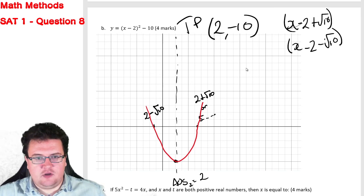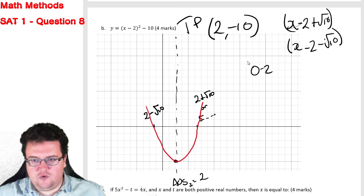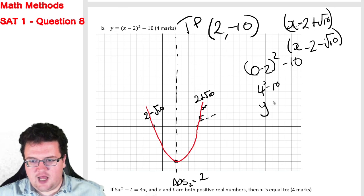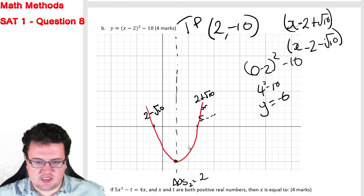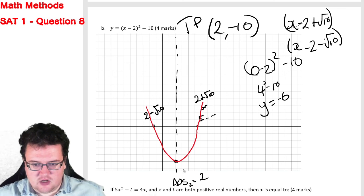When x equals 0, so we have 0 minus 2 squared minus 10, so that's 4 minus 10, so when x equals 0, y equals minus 6, which makes sense because minus 2 minus 4, hey, minus 6.